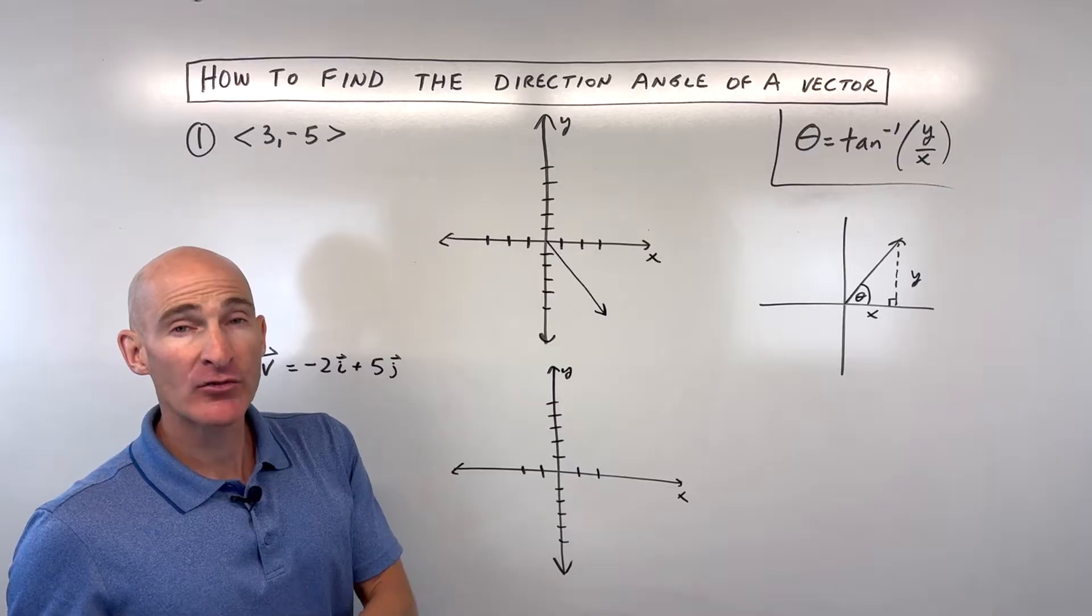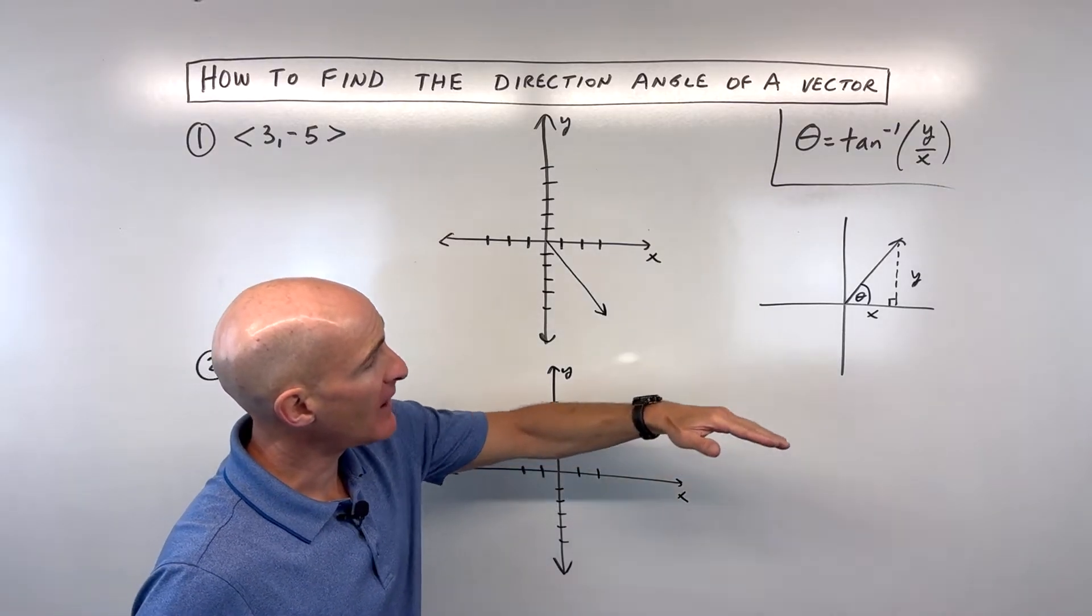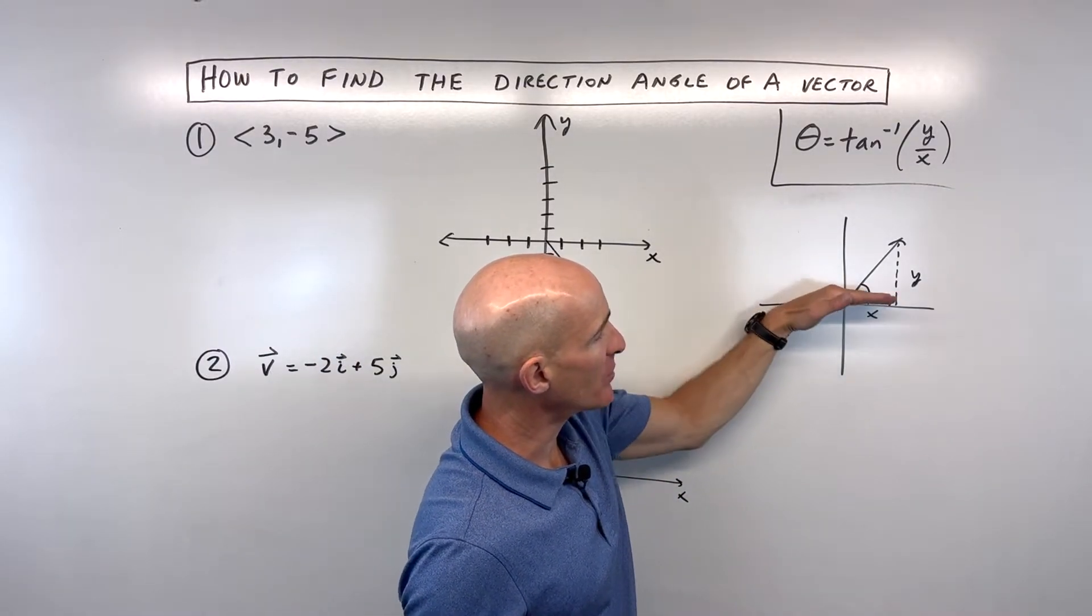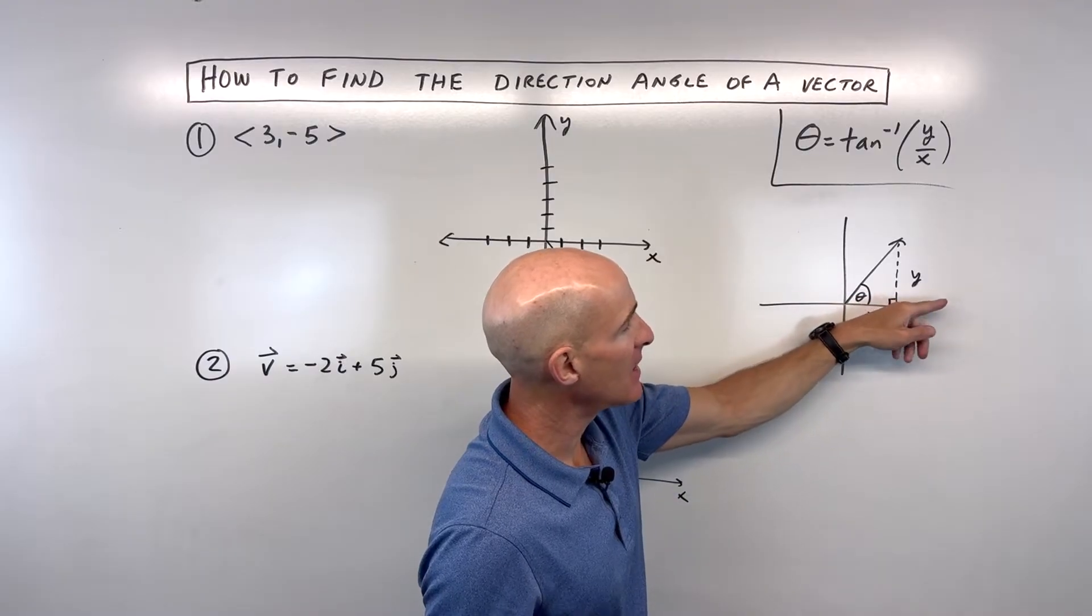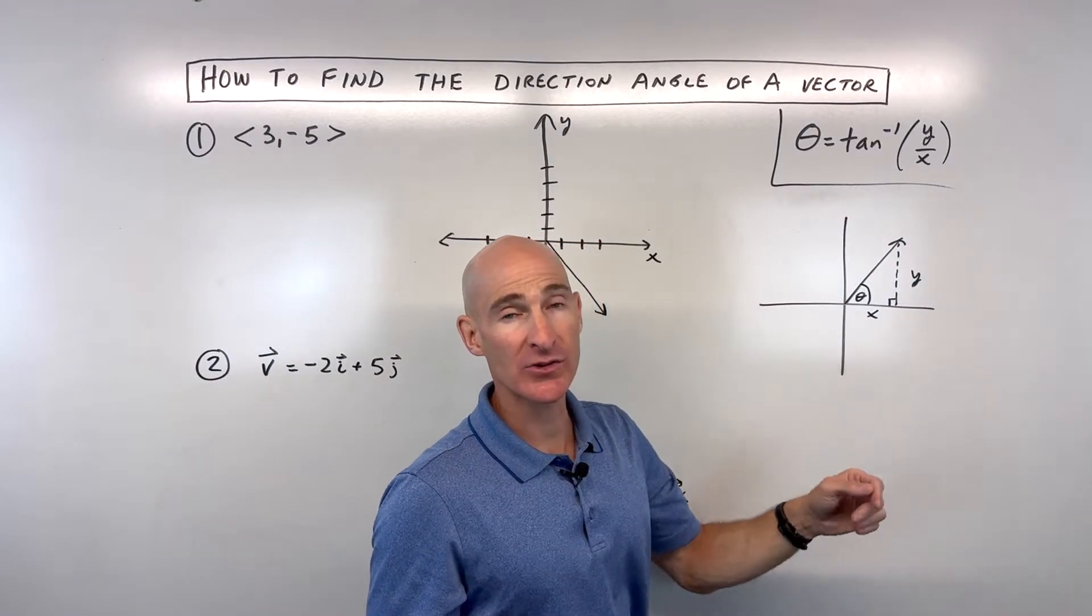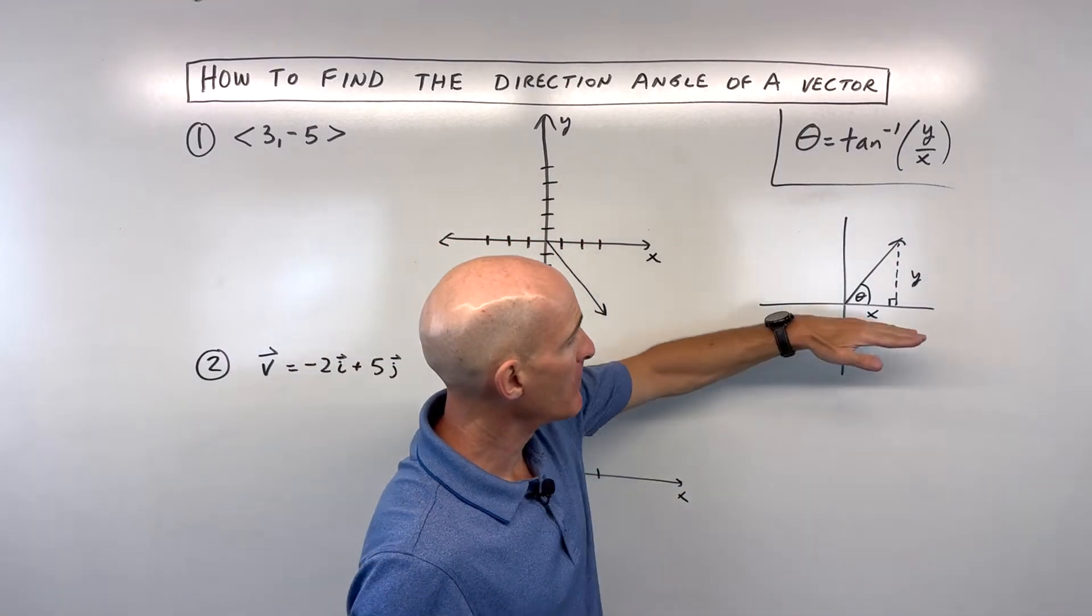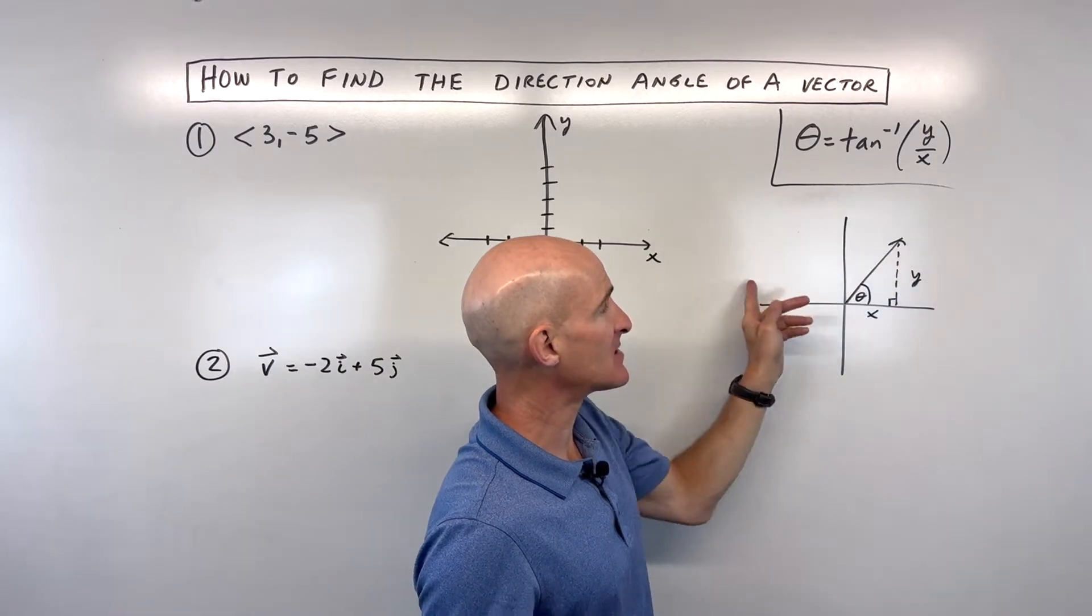When you find the direction angle of a vector, you want to find the angle that the vector makes with the positive x-axis measured counterclockwise. So it's going to be a positive angle measured from that positive x-axis counterclockwise.